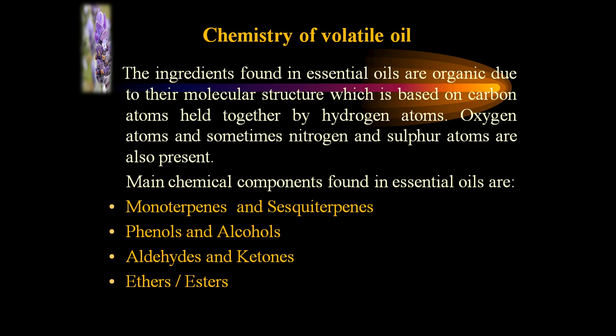Coming to the chemistry of volatile oils: the ingredients found in essential oils are organic due to their molecular structure, which is based on carbon atoms held together by hydrogen atoms. Oxygen and sometimes nitrogen and sulphur atoms are also present.